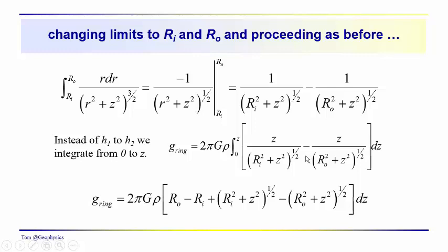And this should be something you might try out. See if you get this expression for the acceleration due to gravity over the ring, which you find in most texts. Two pi G rho, the outer radius minus the inner radius, the inner radius squared plus z squared to the one half power, minus the outer radius squared plus z squared to the one half power.